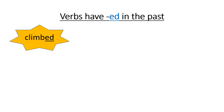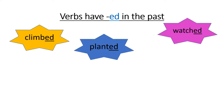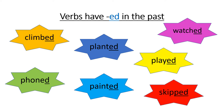So climb becomes climbed, plant becomes planted, watch becomes watched, phone becomes phoned, paint becomes painted, play becomes played, and skip becomes skipped. We have two special verbs here. Phone is special because it already ends with the letter e, so we only need to add a d. And skipped — we have to double the p and then add -ed.